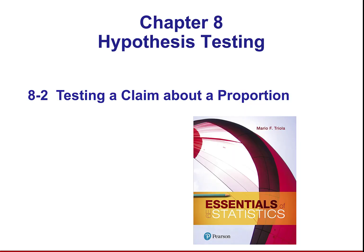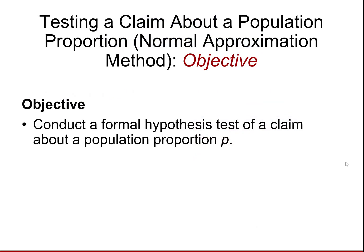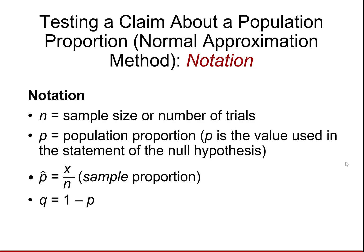Section 8.2: testing a claim about a proportion. The objective here is to conduct a formal hypothesis test of a claim about a population proportion P. Notation that we'll use: N will be the sample size or the number of trials, P is the population proportion, P-hat is the sample proportion, and Q is 1 minus P.